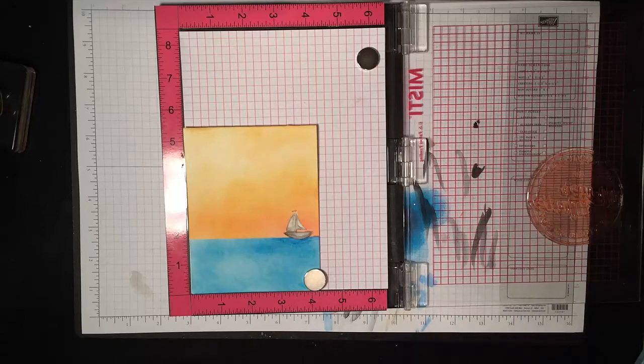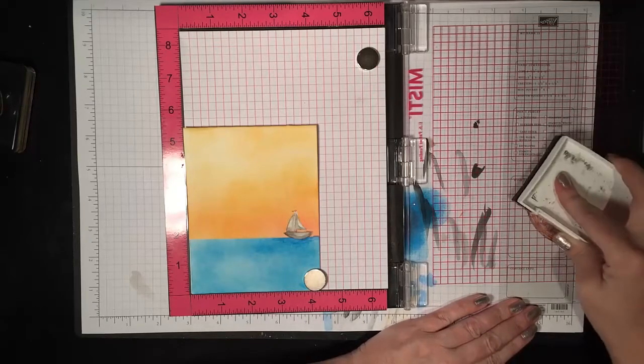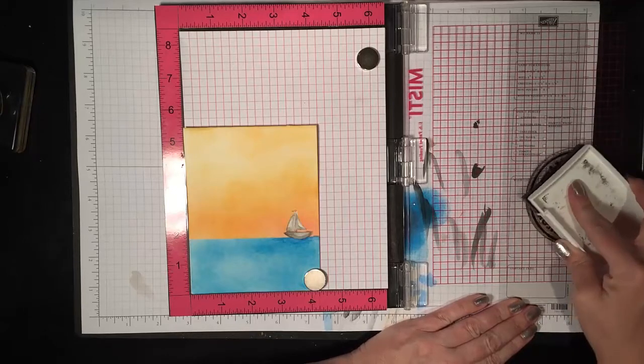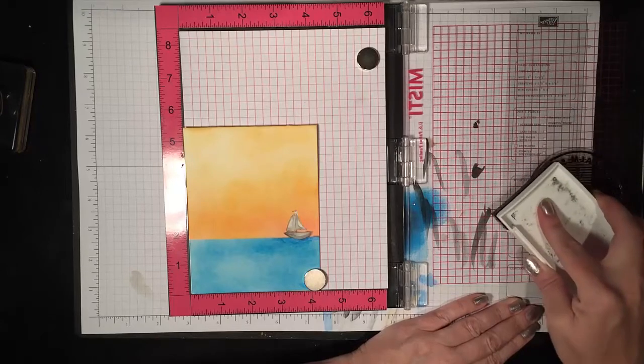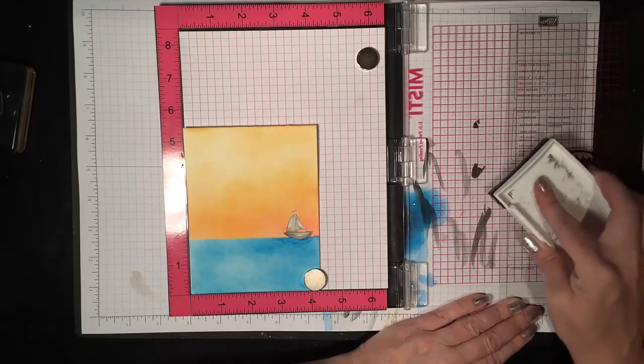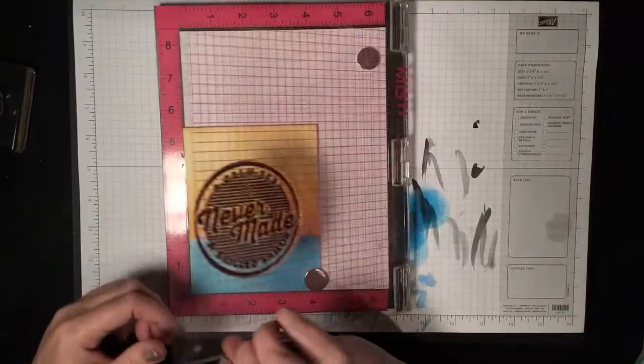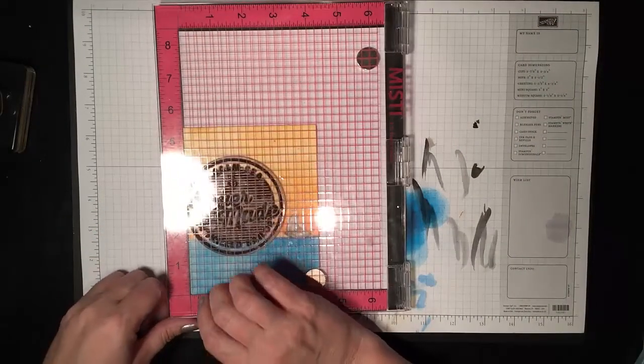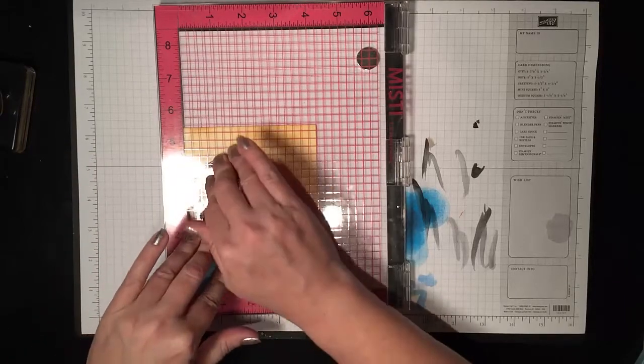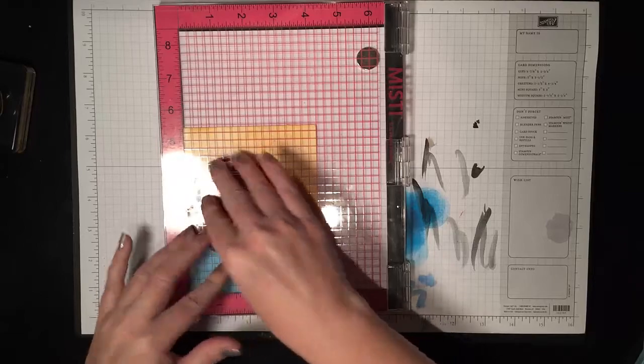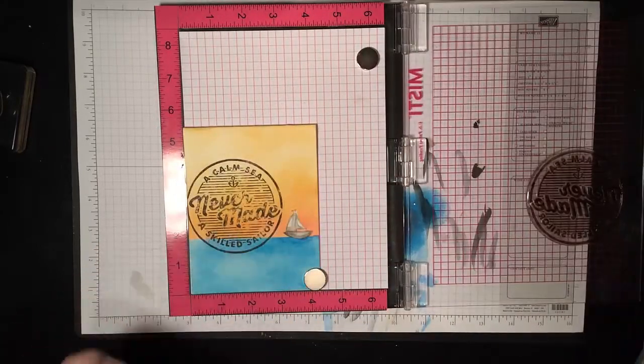I'm using Versafine ink, and even if I were stamping this on smooth cardstock, it would still have the potential to maybe not be fully inked, and that's why this process works so well. But on watercolor paper, it definitely has the potential not to be fully inked the first time you stamp it. So I'm going to put that down. I actually have the sentiment going just a little bit off the left side, which is a look that I like, kind of a, I don't know, just a fun design element.